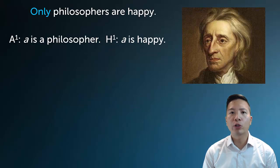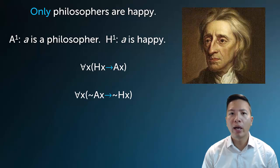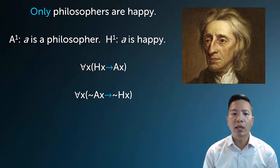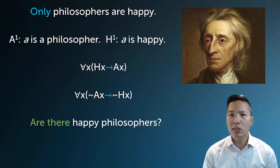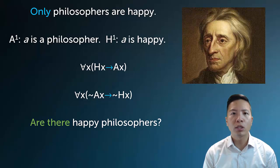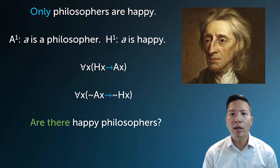We've seen this implication/implicature distinction before without making it explicit. Consider 'only philosophers are happy.' We symbolize it as: if you're happy, then you're a philosopher; or equivalently, if you're not a philosopher, you're not happy. But does it imply there actually exist happy philosophers? Looking at the symbolization, clearly it does not. This statement can be true even if there are no philosophers and no happy people at all. That's why we use the universal to symbolize it — a universal claim about philosophers and happiness doesn't imply any existential claim.